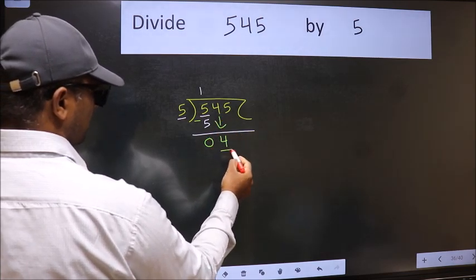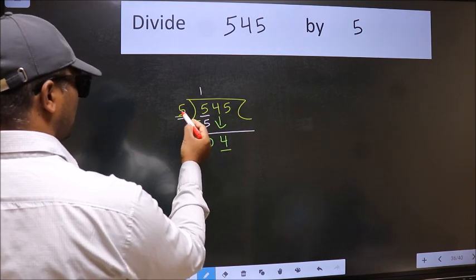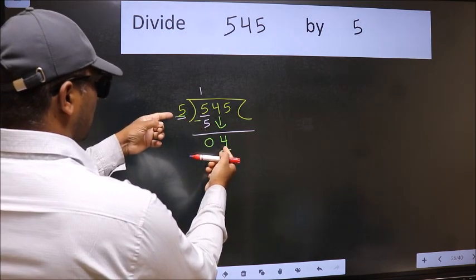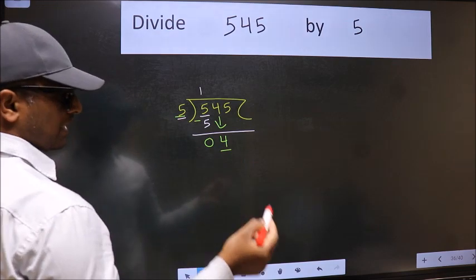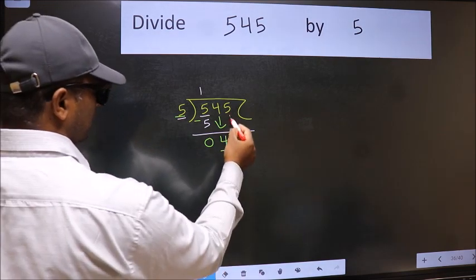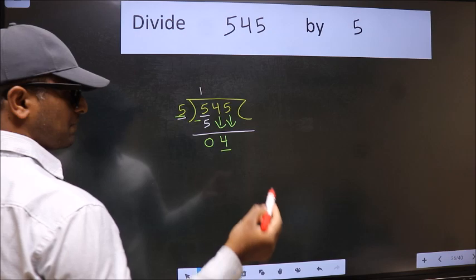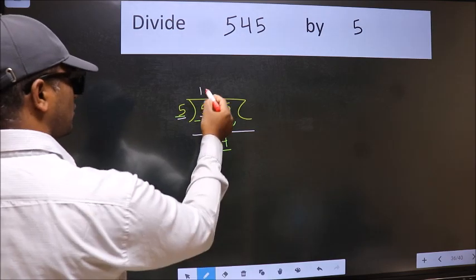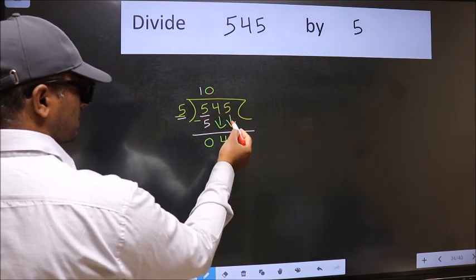4 down. Now here we have 4 and here 5. 4 is smaller than 5, so we should bring down the second number. The rule to bring down the second number is we should put 0 here, then only we can bring this number down.